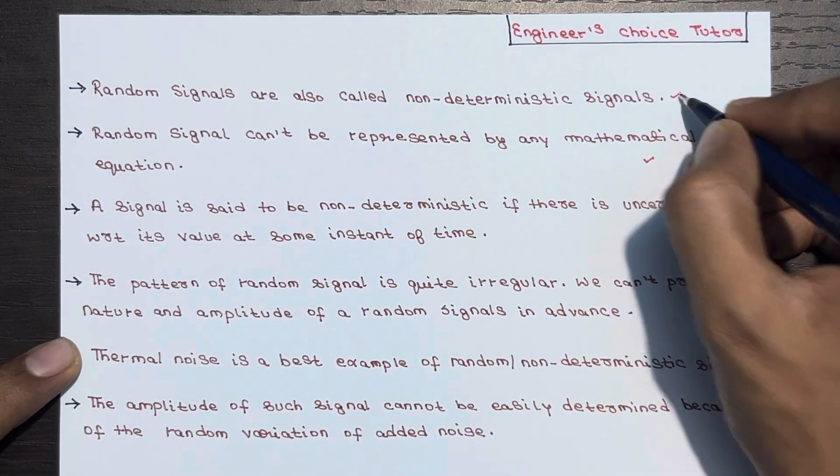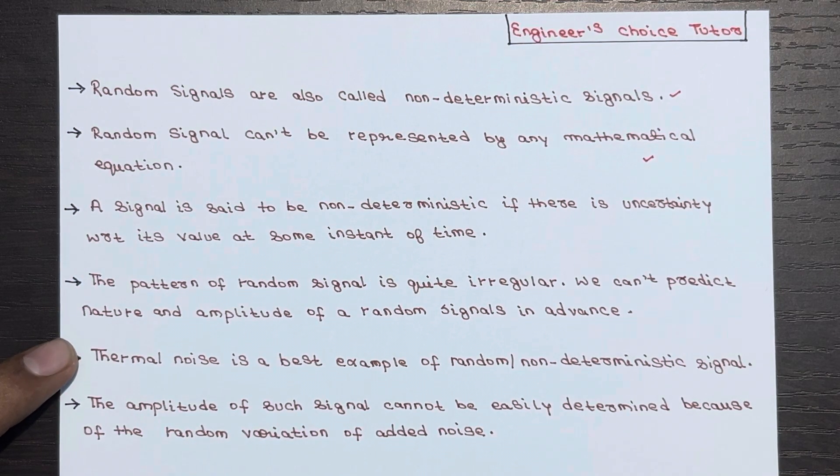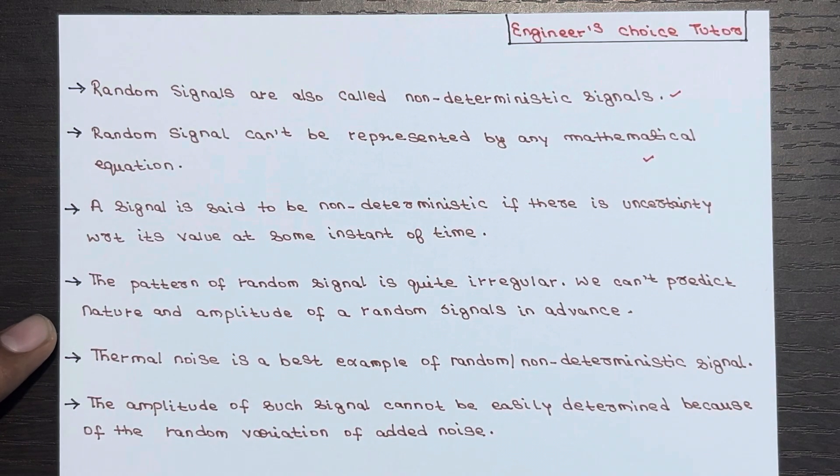You have to consider these two points. Even though there is uncertainty regarding their value at a specific time, the pattern of random signals is irregular and we cannot predict their nature and amplitude in advance.